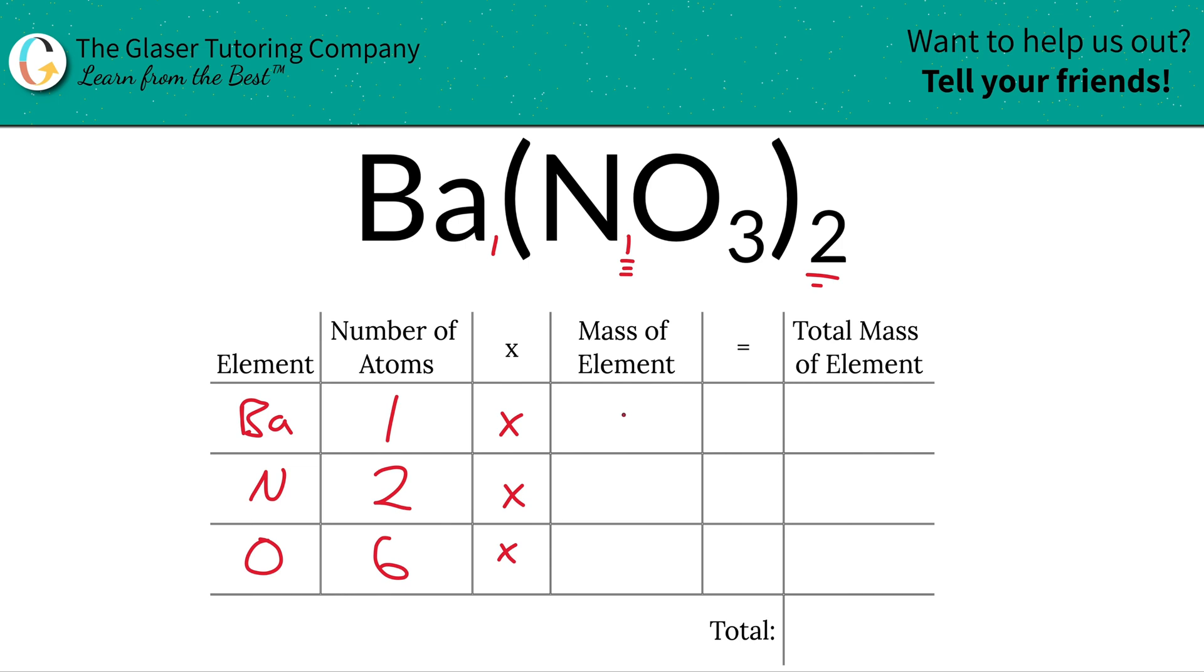Simply then take those values of the atoms, the number of atoms that is, and multiply it by the mass of each element. So that's where the periodic table comes into play.